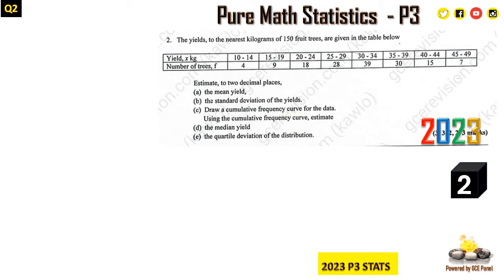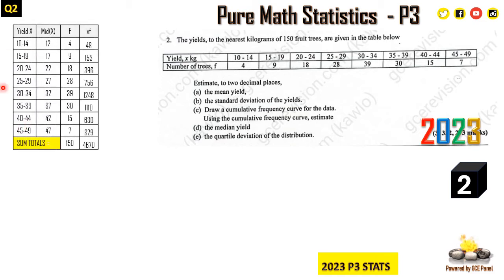This is the question again: to get the yields for these 150 fruits, you need the mean, median, and so on. The first thing is the table which we have drawn. We have to redraw here the yields, and we have to get the mid values because we need to find the mean yield.